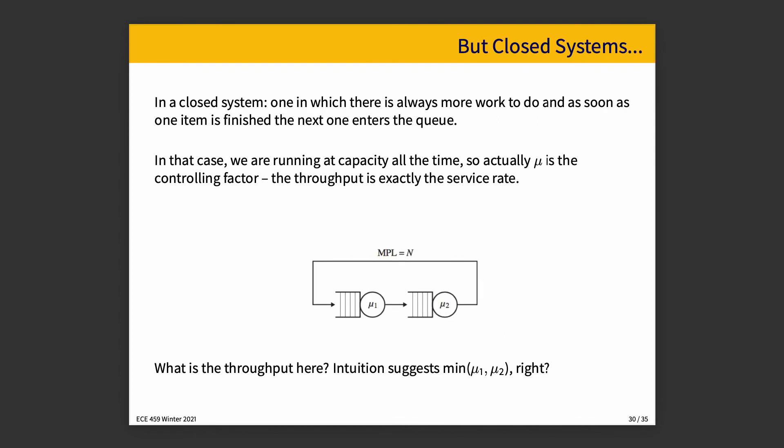In a closed system, that's not the case — there's always more work to do, and as soon as one item finishes the next enters the queue. Picture a sprint where every time a ticket is completed a new one is added — you're always running at capacity. In that case mu is the controlling factor: however many things you can get done is exactly your throughput. If you can do five transactions at a time, that's your throughput; increase to ten and that's your new throughput.